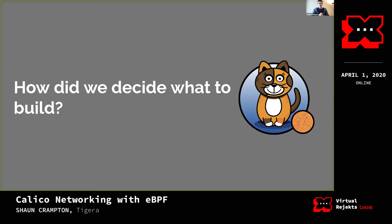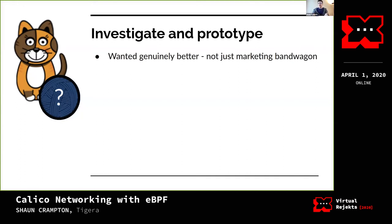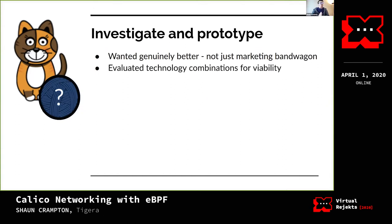We decided to add a new data plane and figure out what Calico's V2 data plane was going to be. We did a lot of investigation and prototyping. We wanted the new data plane to be genuinely better than the old — genuine performance wins, at least for the right sort of user on a new kernel. We wanted it to be genuinely higher performance and higher scale. We evaluated various different technology combinations, going broader than BPF, but BPF was on our list from the start.